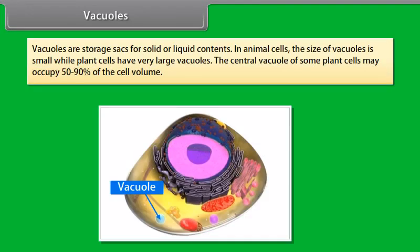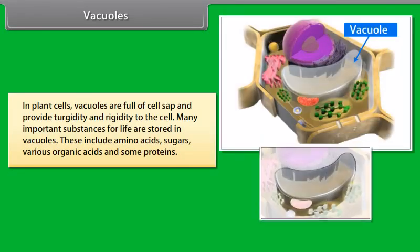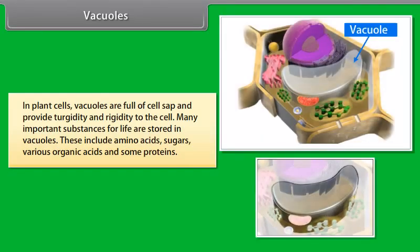Plastids are present only in plant cells, not in animal cells. Plastids are similar to mitochondria in external structure. There are two types of plastids: chromoplasts, which are colored plastids, and leukoplasts, which are white or colorless plastids. Chromoplasts provide different colors to flowers and fruits. Leukoplasts are colorless plastids that store materials like starch, oils, and protein granules. Chlorophyll-containing plastids are known as chloroplasts.